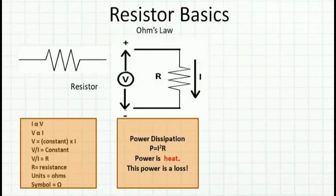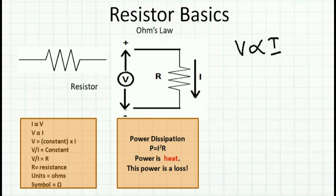What is a resistor? A resistor is a circuit element that opposes the flow of current. Suppose I have a resistor R exposed to a voltage V, and then a current I starts flowing. When we apply a voltage V, a current I flows as per the equation: V is proportional to I, or V divided by I is always a constant.